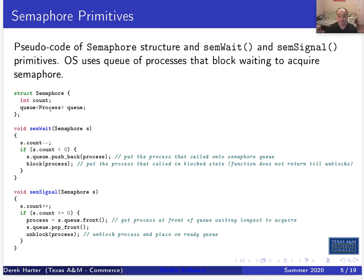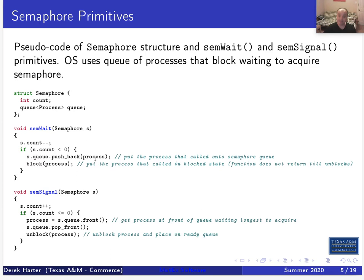If the count is zero or positive, the semaphore should be considered available. As soon as it becomes negative, it should be considered unavailable and something needs to block and wait on it. Normally we initialize the count to one. The first process that acquires it will decrement the count and enter immediately, but a second process — if the first hasn't released or signaled the semaphore — will make the count negative and the OS will block it. The semaphore has two primitives: sem_wait to acquire a lock, and sem_signal to release.